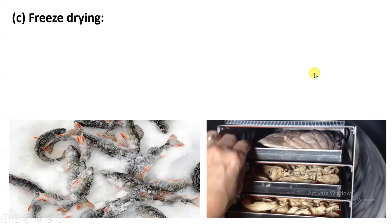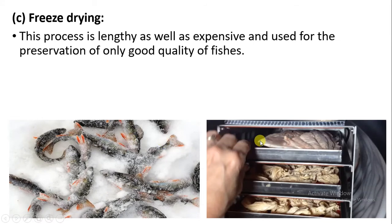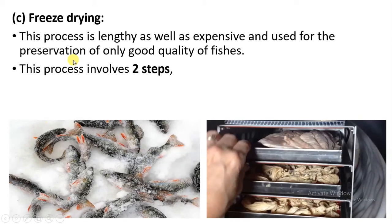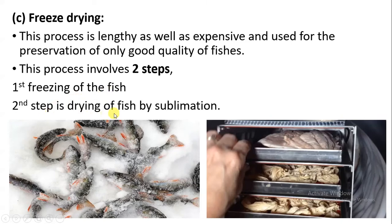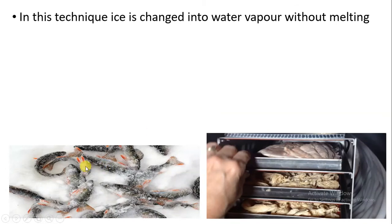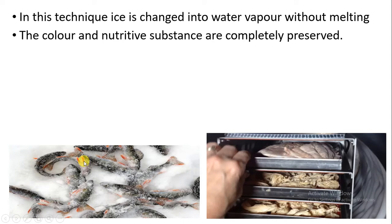The next method is freeze drying. It is a lengthy and expensive process, but the fish can be preserved for a long time and always remains in good quality. There are two steps: first is freezing of the fish, and second is drying of fish by sublimation. In this technique, the ice is changed into water vapor without melting — this process is called sublimation. The color and nutrient content of the fish are preserved as they are.